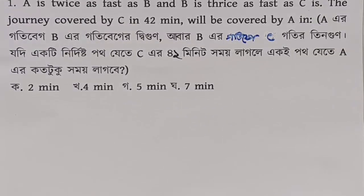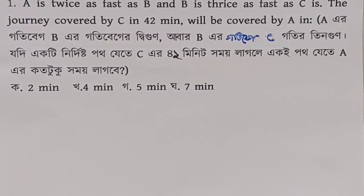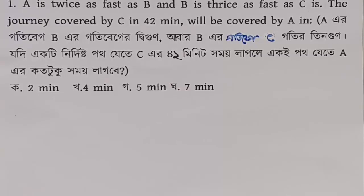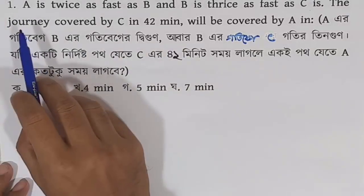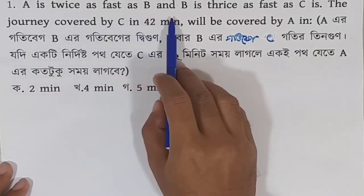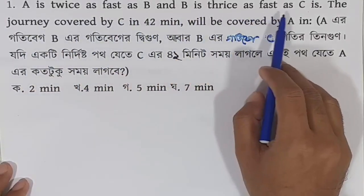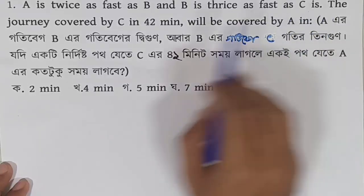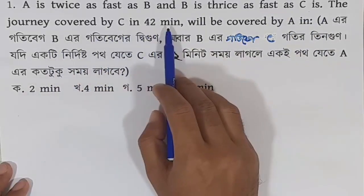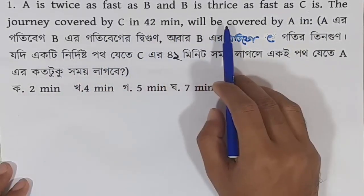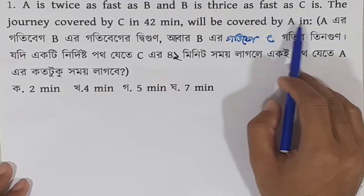Assalamualaikum. Time Speed Distance is an important topic in Acta Math for Bank Job Preparation. I will develop the concept in the next video. Here is the first problem: A is twice as fast as B, and B is twice as fast as C. The journey covered by C in 42 minutes will be covered by A in how many minutes?